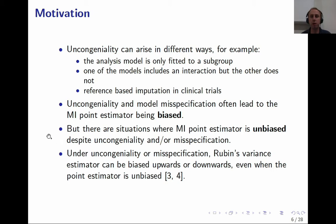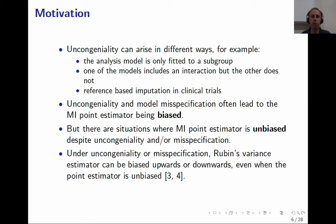Uncongeniality and model misspecification often lead to the MI point estimator being biased, but there are situations where the MI point estimator can be unbiased despite uncongeniality or model misspecification. Under uncongeniality or misspecification, Rubin's variance estimator can be biased upwards or downwards even when the point estimator for the parameter of interest is unbiased.